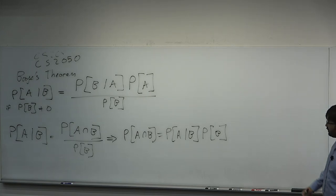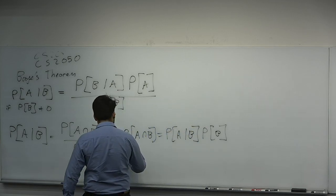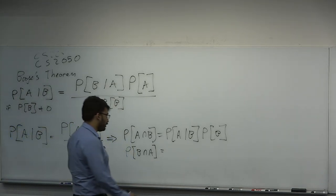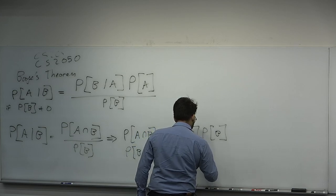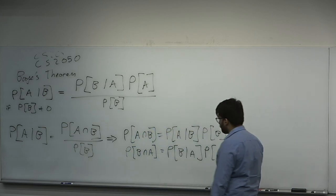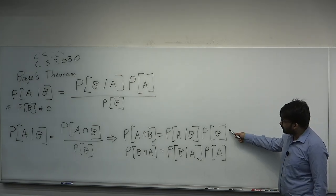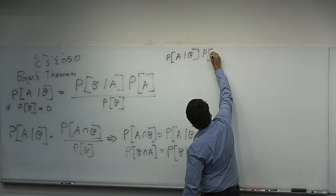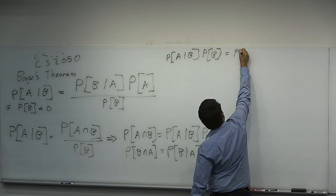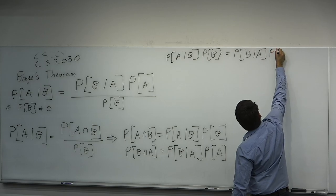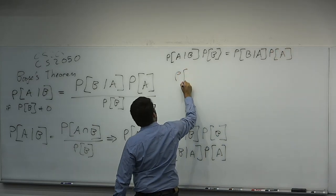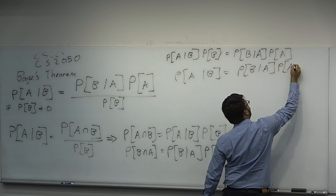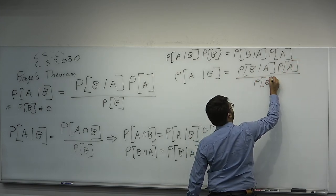Importantly, the probability of A intersect B equals the probability of B intersect A. What's the probability of B intersect A? It's the probability of B given A times the probability of A — from the same trick. So these two statements are equal. We can say the probability of A given B times the probability of B equals the probability of B given A times the probability of A. From there, the probability of A given B equals the probability of B given A times the probability of A, divided by the probability of B.